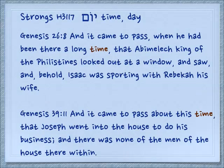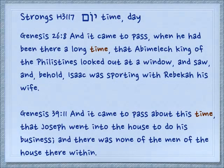The word 'yom' means day, but occasionally it's translated as 'time.' Genesis 26:8: 'And it came to pass, when he had been there a long time — many days — that Avimelech, king of the Philistines, looked out at a window and saw, and behold, Isaac was sporting with Rebekah, his wife.' Genesis 39:11: 'And it came to pass about this time that Joseph went into the house to do his business, and there was none of the men of the house there within.'